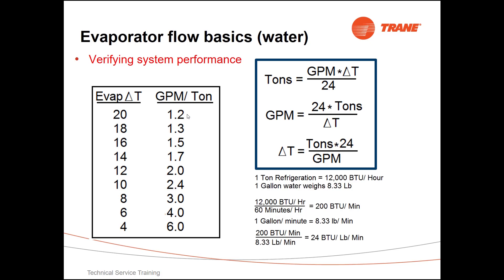So we can see here at 1.2 gallons per minute per ton, that evaporator would do a 20 degree delta T, and all the way down here at 6 gallons per minute per ton, that machine would only be able to produce a 4 degree delta T.